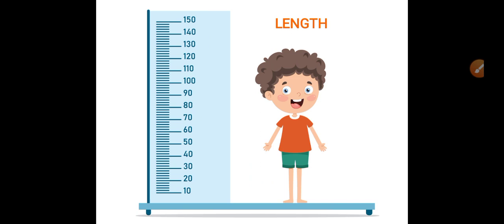First one is length. So what is length? Length is the distance between two points, and the SI unit of length is meter. To measure length we use meter ruler and measuring tape.